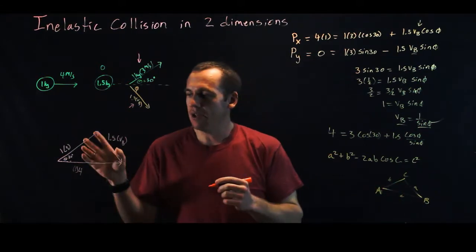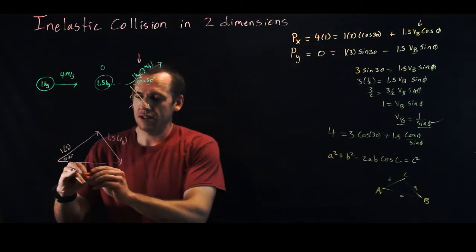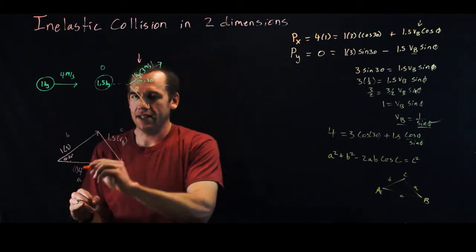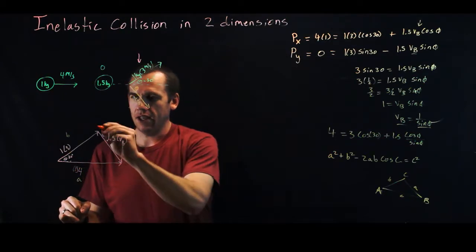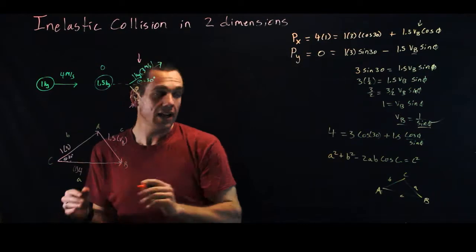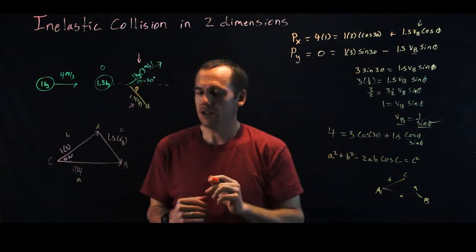So I'm going to go ahead over here, and I'm going to say this is side a, and this is side b, and this is side c, and this is angle a, and this is angle b, and this is angle c. And I'm just going to apply the law of cosines to it.